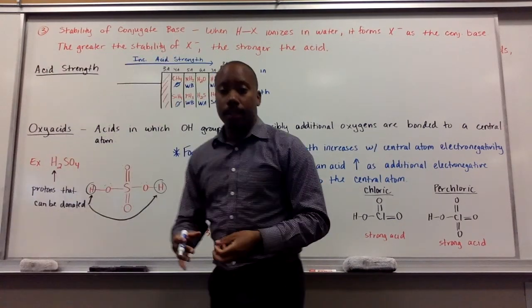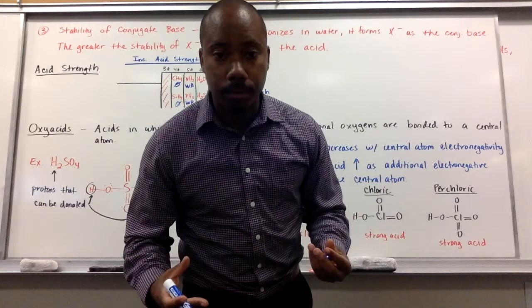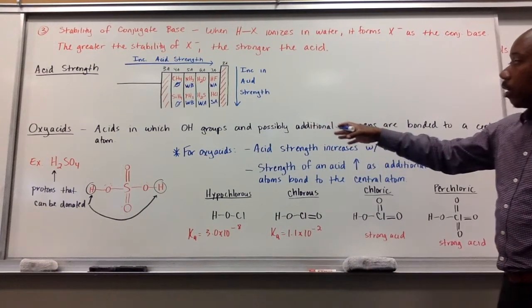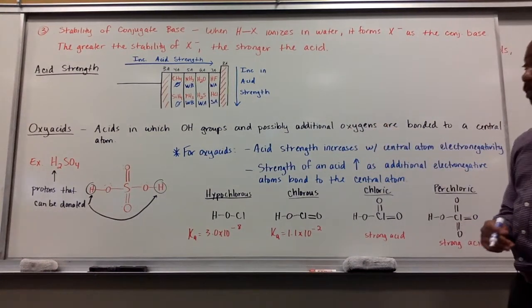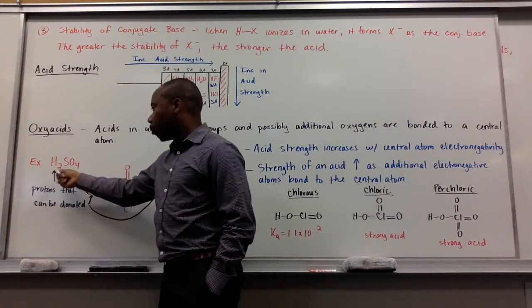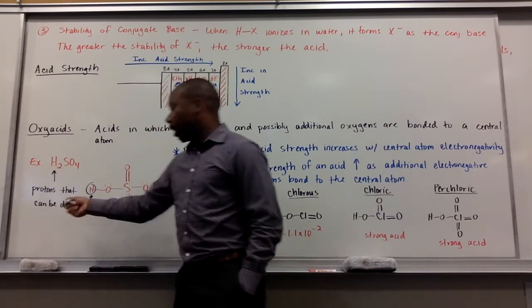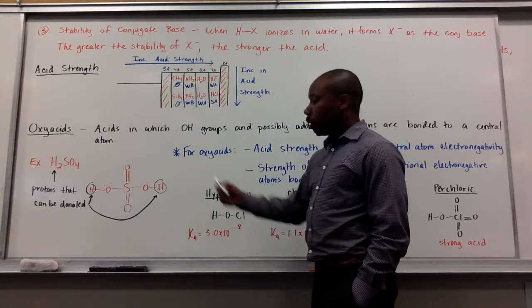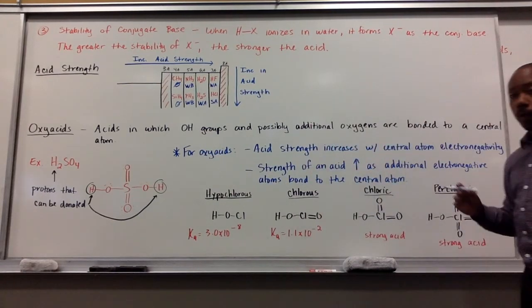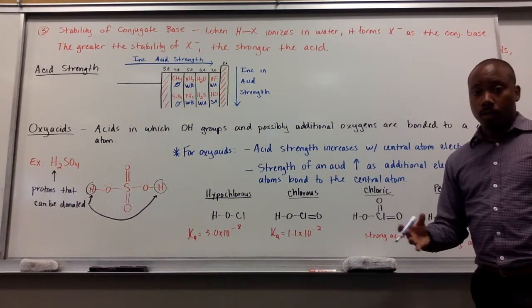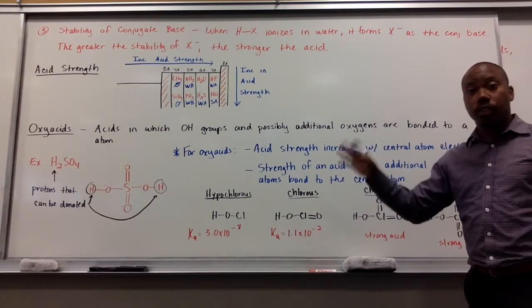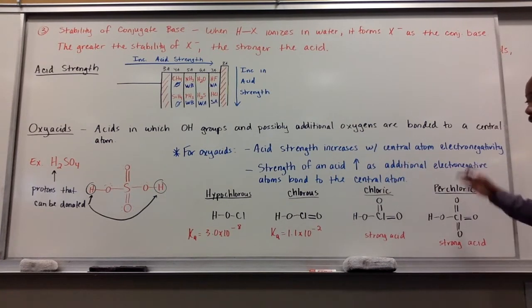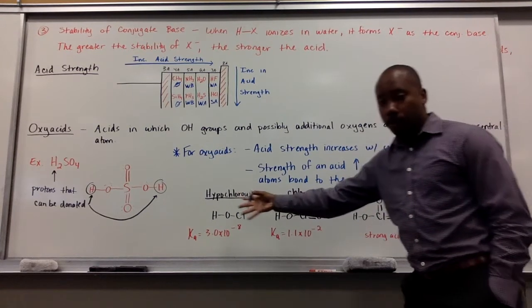Now, acid strength also depends on the chemical structure of a compound or substance as well. For example, we have oxy acids. An oxy acid is an acid in which the OH group and possibly even additional oxygens are bonded to a central atom. For example, sulfuric acid, H2SO4. These H's are the protons that can be donated. Here's my Lewis structure here. The H's can be donated. For oxy acids, acid strength increases with the central atom's electronegativity. The more electronegative central atom, the stronger the acid.